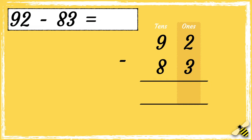So we need to borrow a ten from the tens column. If we borrow a ten, nine tens becomes eight tens. So now we have 12 take away three, which is nine. Then we need to do eight take away eight, which is zero. So the answer is 9.